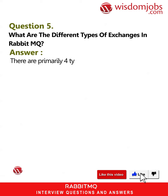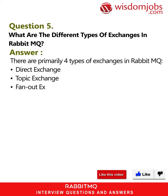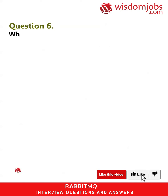Question 5: What are the different types of exchanges in RabbitMQ? Answer: There are primarily four types of exchanges in RabbitMQ: Direct Exchange, Topic Exchange, Fanout Exchange, and Headers Exchange.